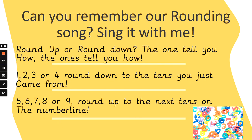Are you ready to sing the song again? Round up or round down, the ones tell you how, the ones tell you how. One, two, three or four, round down to the tens you just came from. Five, six, seven, eight or nine, round up to the next tens on the number line. Let's sing that again — round up or round down, the ones tell you how. One, two, three or four, you round down to the tens you just came from. Five, six, seven, eight or nine, you round up to the next tens on the number line.